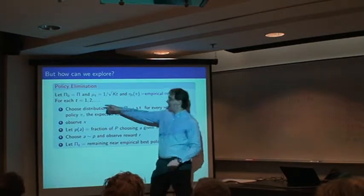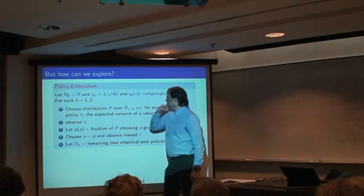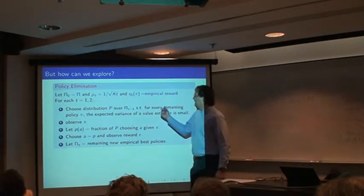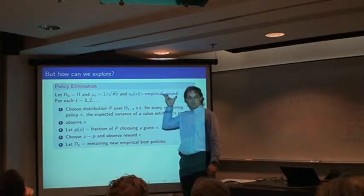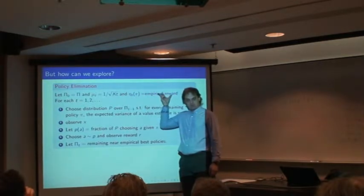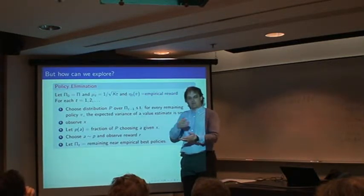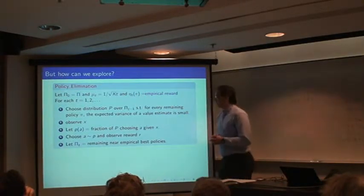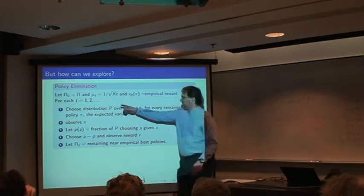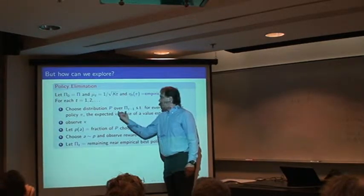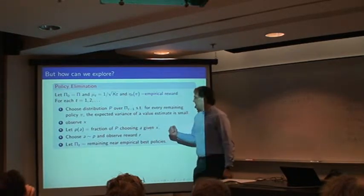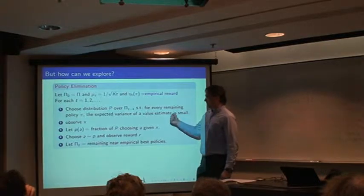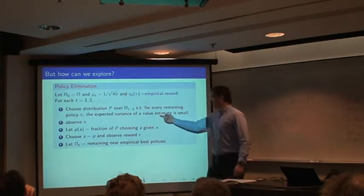So if you have a set of policies, we're going to have some minimum probability of exploration. And then we're going to have our empirical reward estimate. So this is your double robust estimate. When you have random actions, you can give an estimated value of a policy. So at each time step, you choose a distribution over your remaining policies. For every remaining policy, you expect the variance of your value estimate is small.